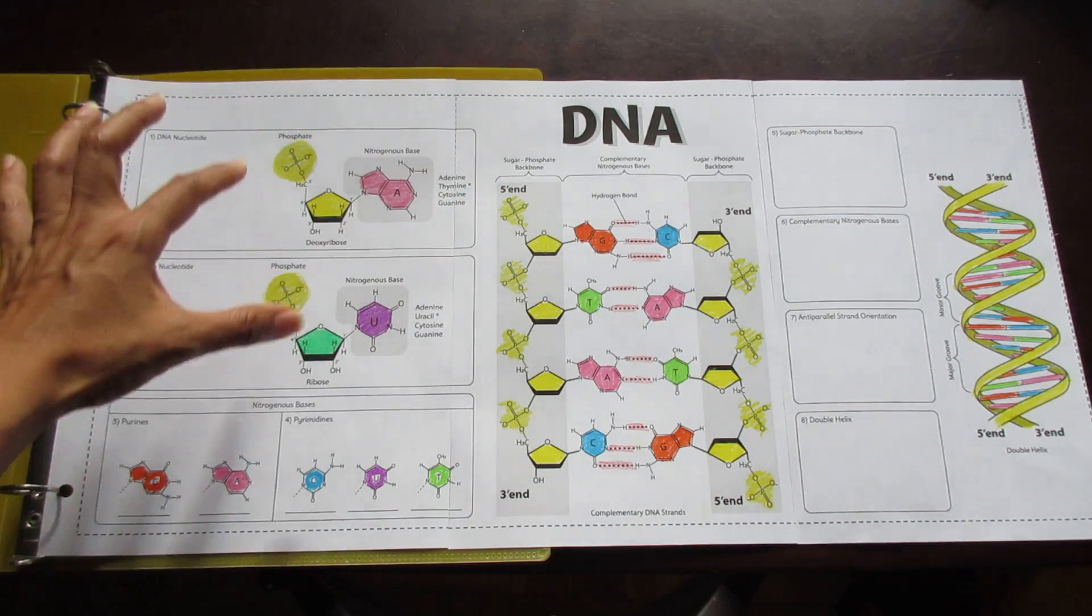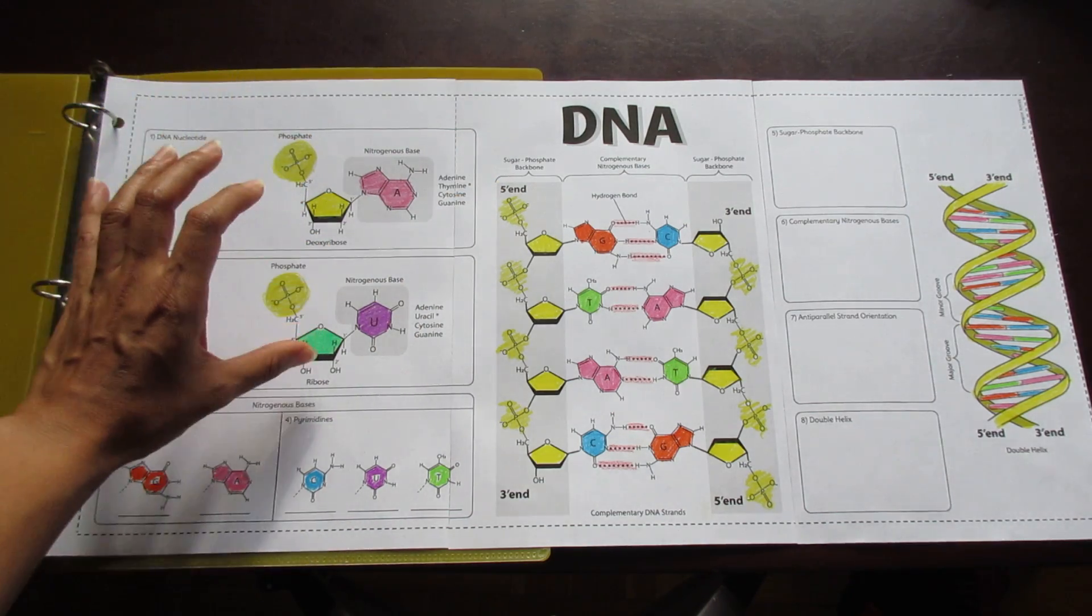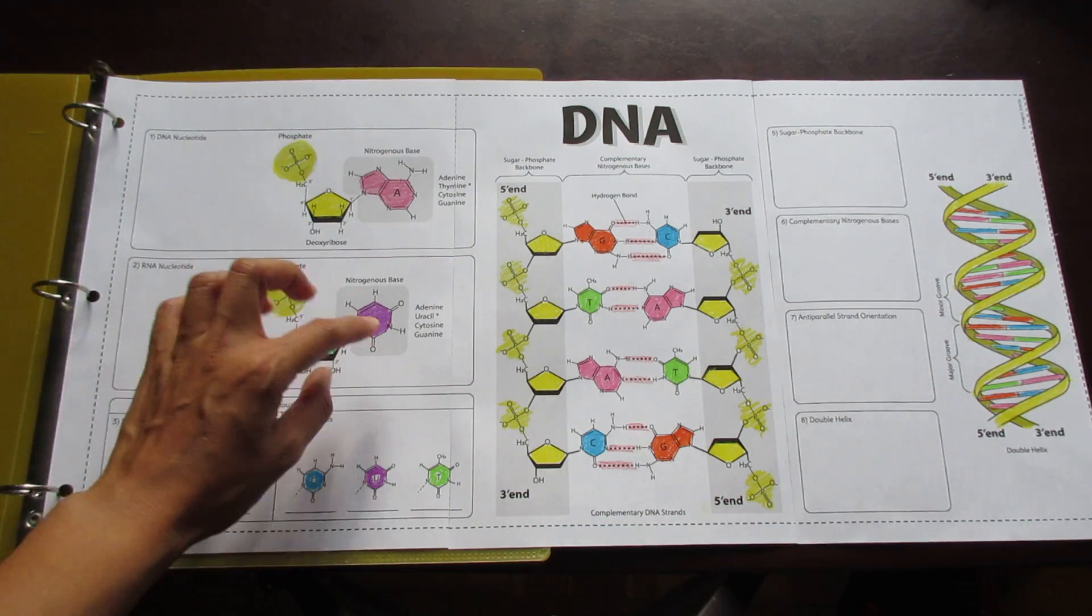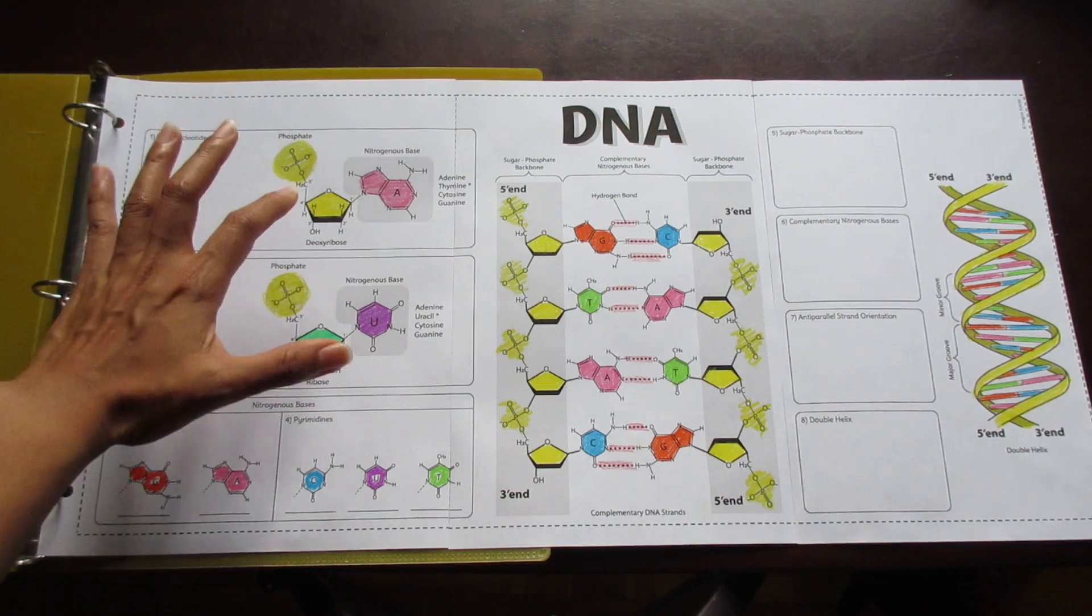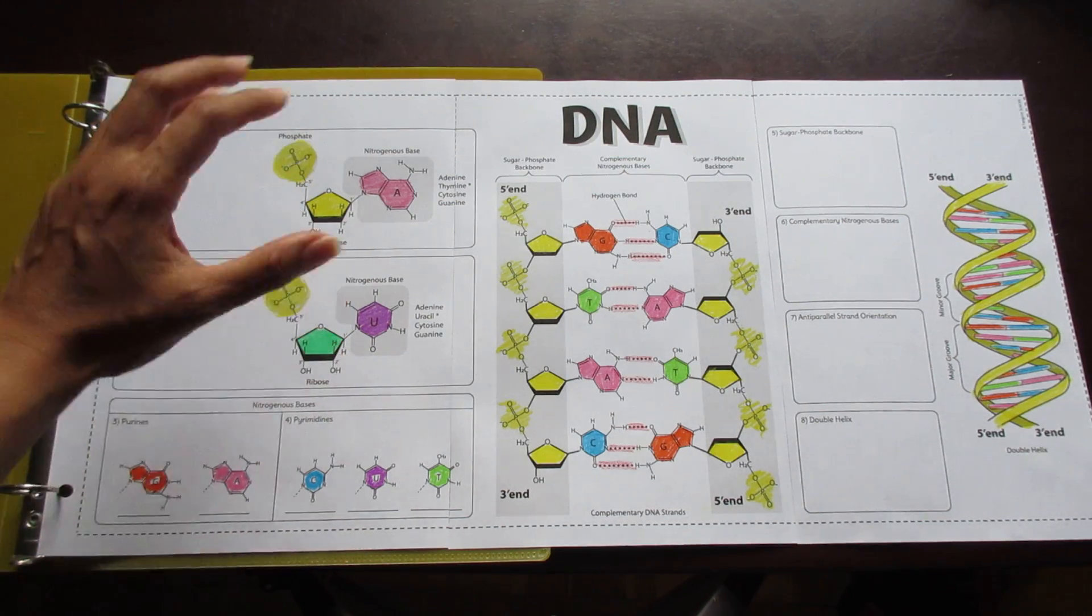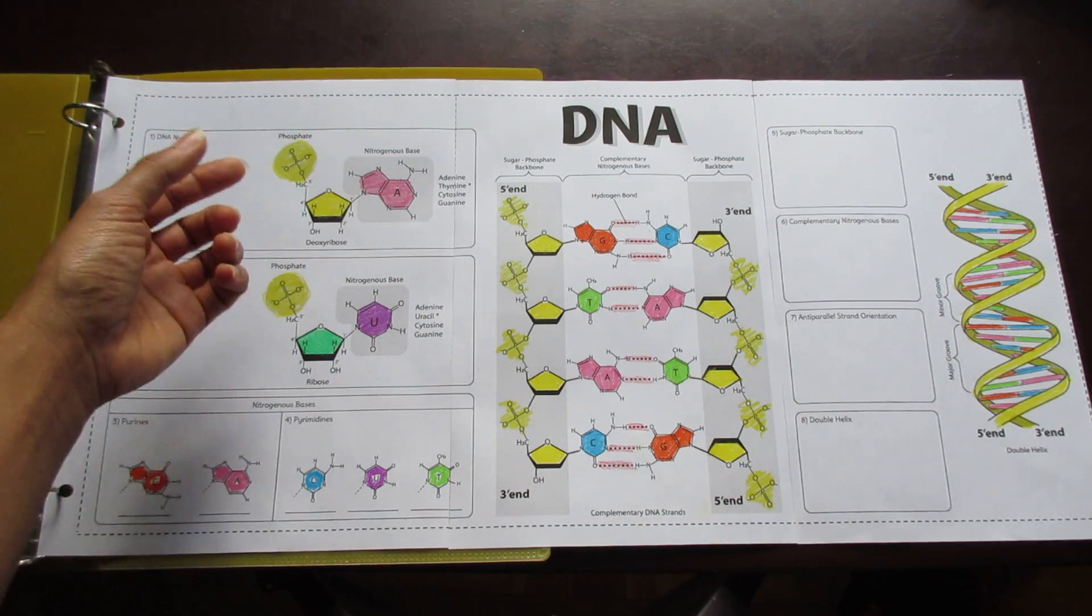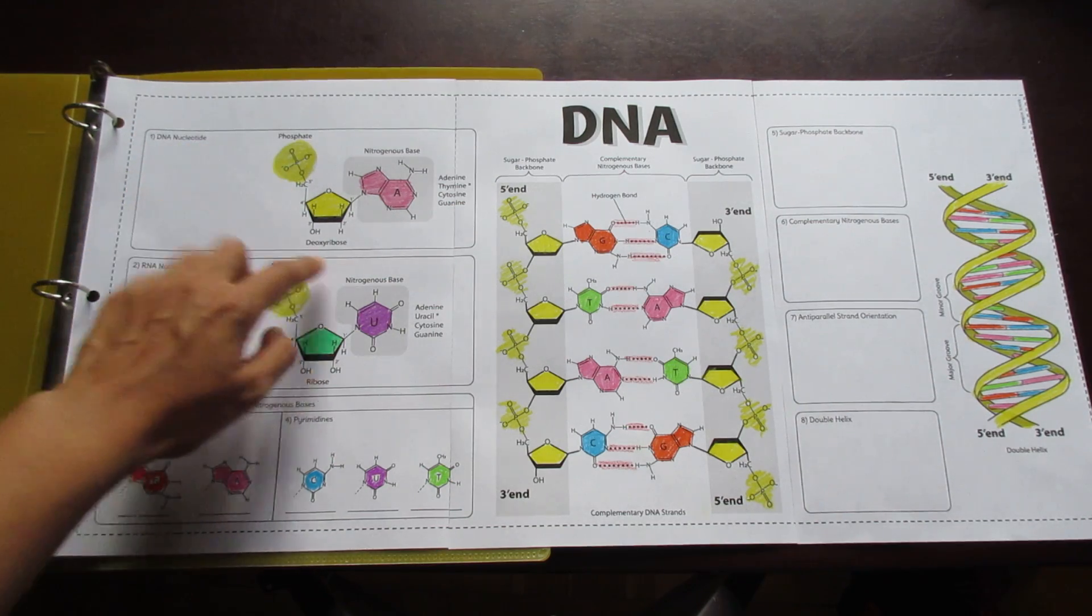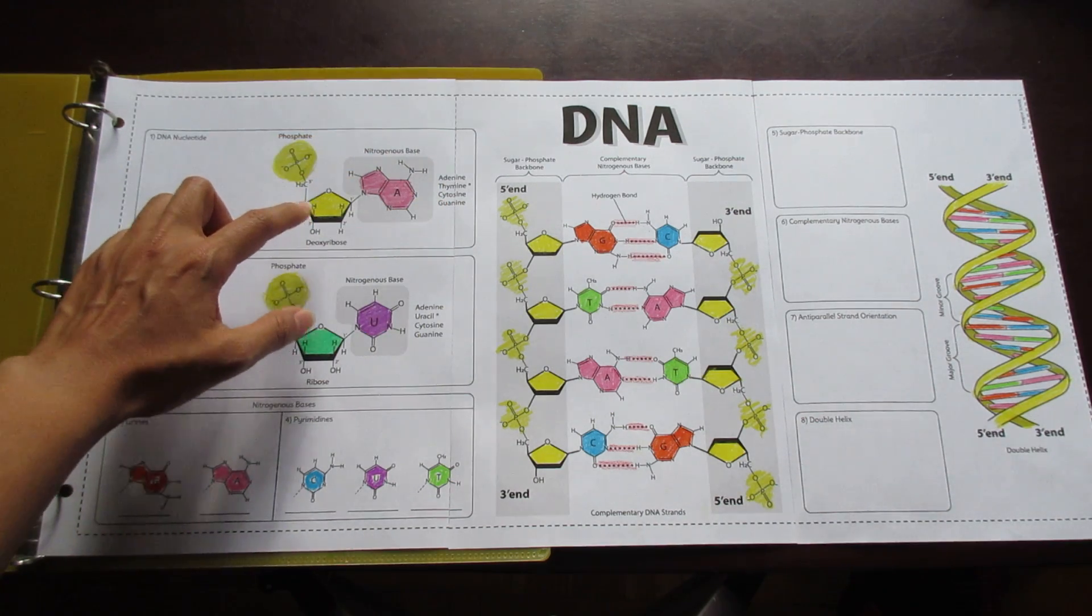On the left side, what you'll notice is that I've highlighted the differences between the DNA nucleotide and the RNA nucleotide. Often the RNA nucleotide is taught separately, but when you show them together, you can help highlight the important differences between DNA and RNA. And because they are so similar, it'll help them learn RNA a little bit better as well. On the side, I've also mentioned the different types of nitrogenous bases that fit with each type of nucleotide.